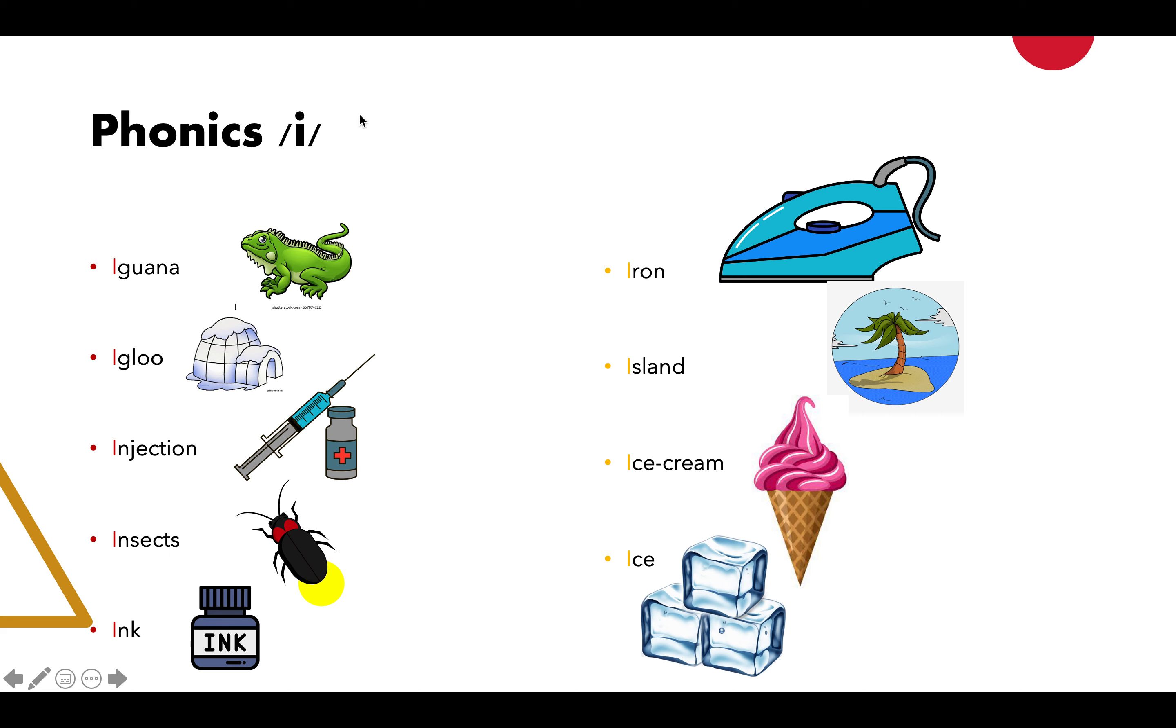Walaupun phonics dia sama /i/, tetapi dia ada dua sebutan yang berbeza - sama ada /e/ ataupun /i/. Dia depends kepada perkataan dia. So ikut teacher sama-sama: iguana, igloo, injection, insects, ink.